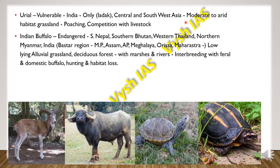Then we have the Indian Buffalo, which is endangered. It is found in southern Nepal, southern Bhutan, western Thailand, northern Myanmar and India. In India it is found in the Bastar region of Madhya Pradesh, Assam, Arunachal Pradesh, Meghalaya, Orissa and Maharashtra. They are found in low-lying alluvial grasslands with very rich vegetation, and in deciduous forests with marshes and rivers. The main threats are interbreeding with feral and domestic buffalos, hunting for food, and habitat loss.